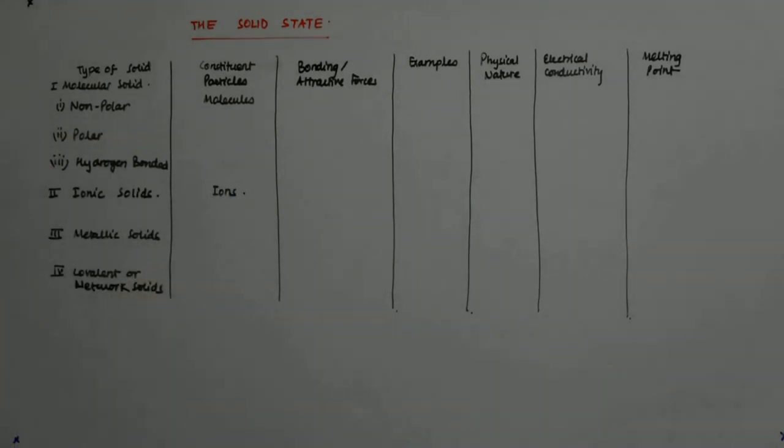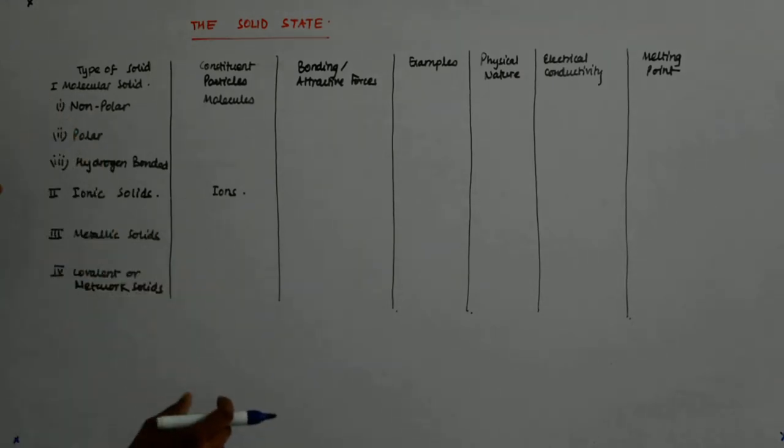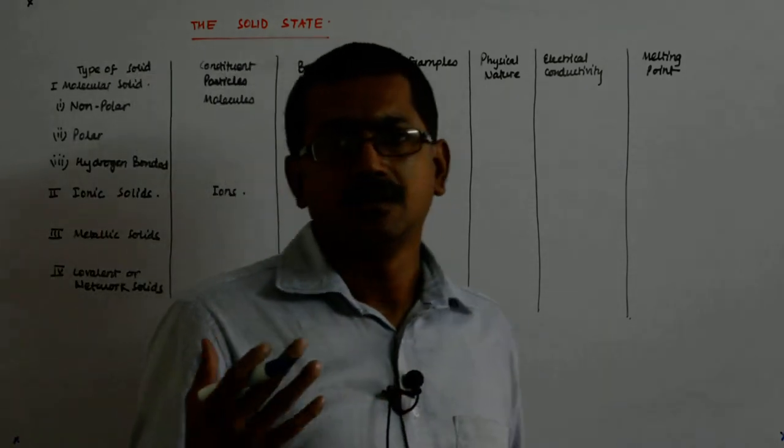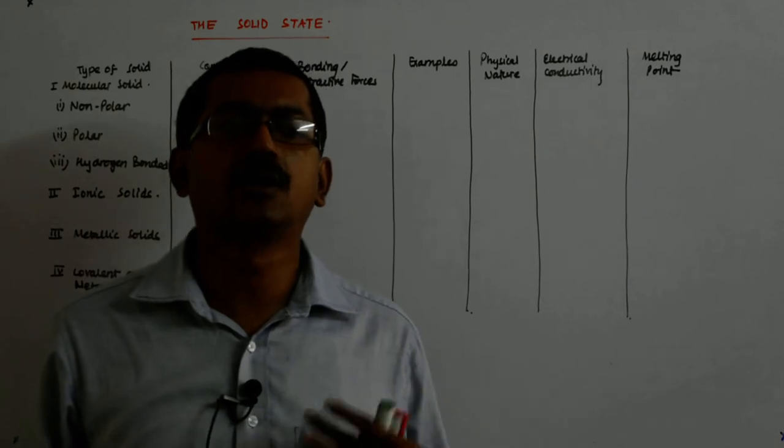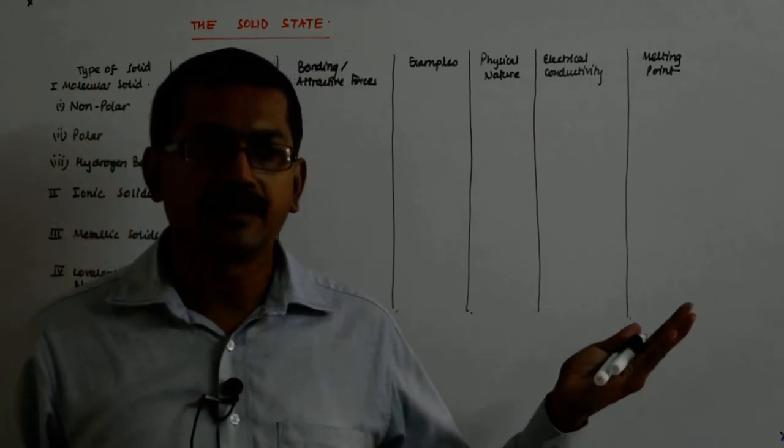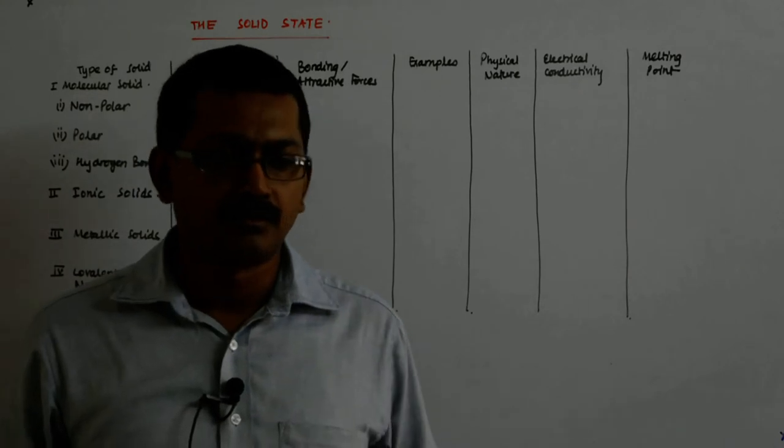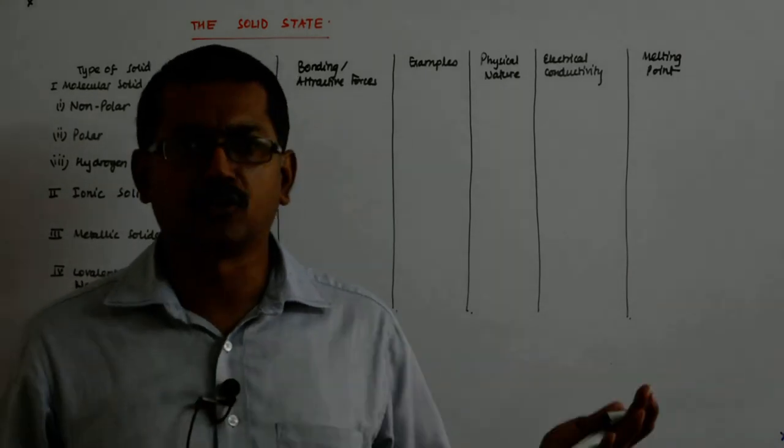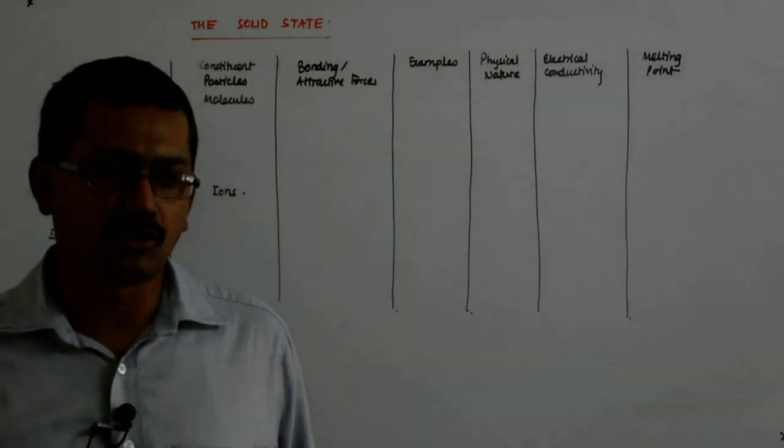How about the metallic solids? Positive ions in a sea of delocalized electrons. We have seen that in electricity. The metallic solids are metallic because they are good conductors. They conduct electricity. Which means what? They have a cloud of electrons.